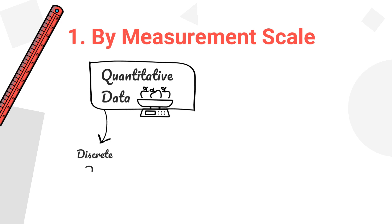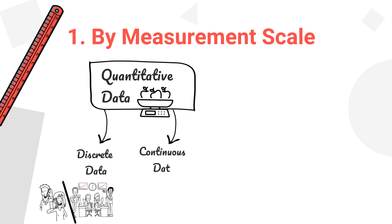Discrete data represents whole numbers with distinct intervals between them. Examples are number of customers and shoe size, whereas continuous data represents values that can take any value within a range. Examples are height and temperature.